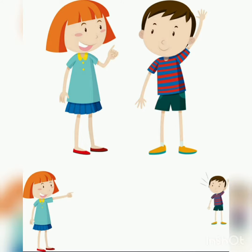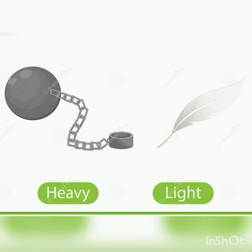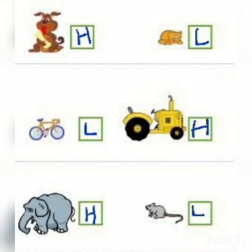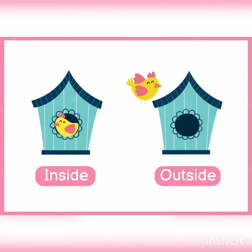Next is heavy and light. It is based on the weight. Things or persons having more weight are the heavy ones, and things with less weight are the lighter ones. Here are some images showing heavy and light things. For the heavy ones I have written H, and for the lighter ones I have written L.